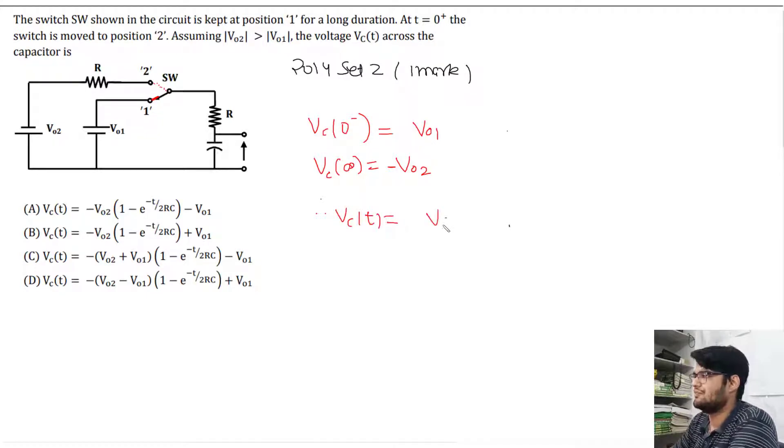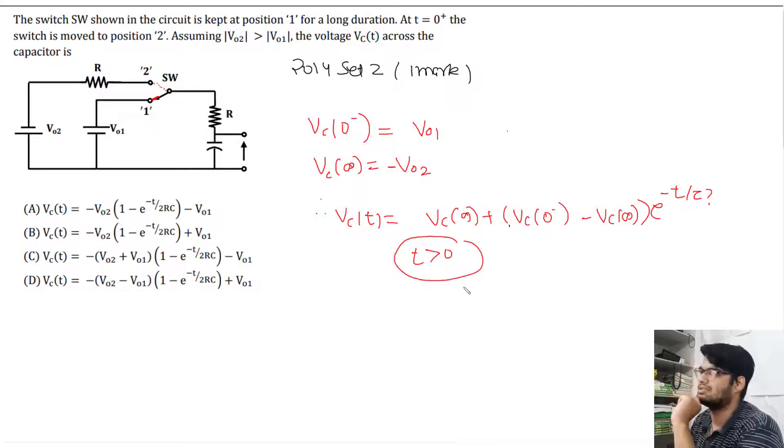Therefore, the equation for Vc(t) is: Vc(∞) plus (Vc(0-) minus Vc(∞)) times e to the power minus t by tau. The question asks for t greater than zero duration.